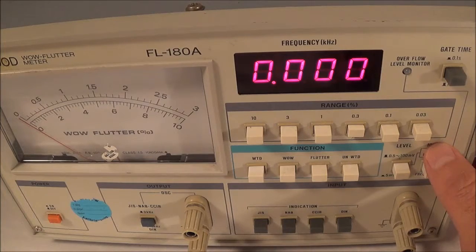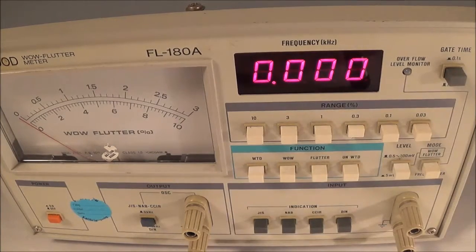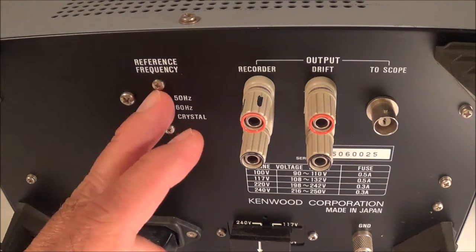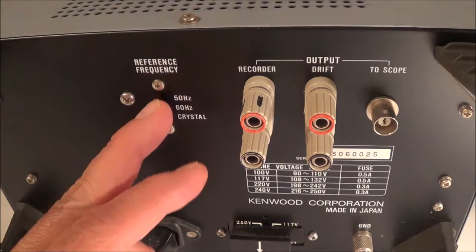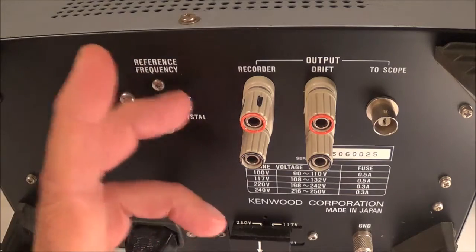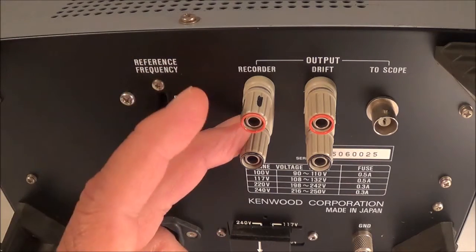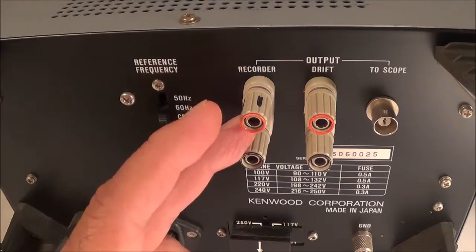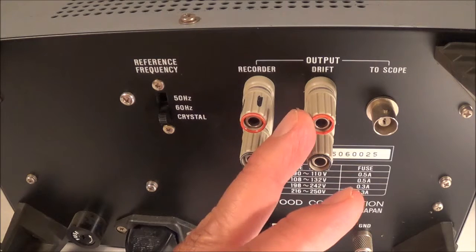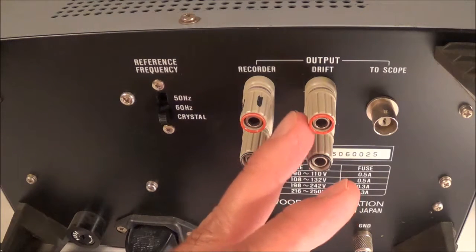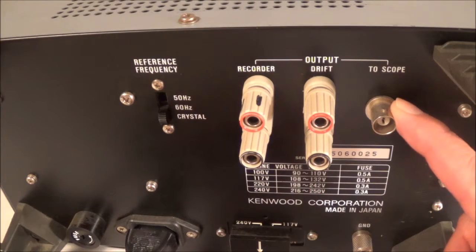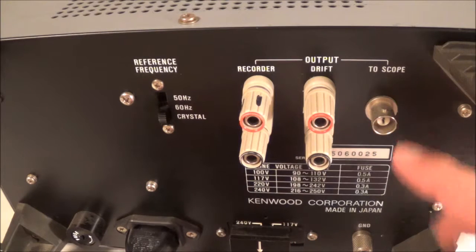I guess I'll turn it over now. This is the back. That was the reference frequency for the counter. Here you can hook up some kind of chart recorder and drift output. I think that puts out some kind of a voltage. Drift has something to do with drifting off speed. This is an output where you can hook up a scope directly to it.